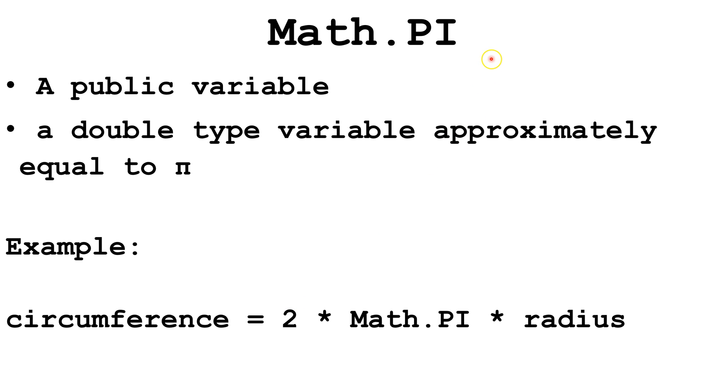Now, let's look at this. This is not actually a method. This is a public variable, so we are actually accessing a variable inside the Math class. This is a public variable, so we can access it without a getter method. Math.pi is a double variable that is approximately equal to the mathematical constant pi.